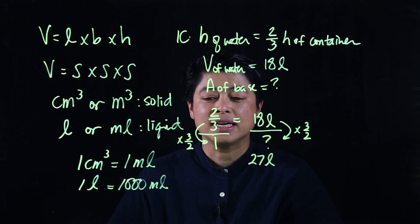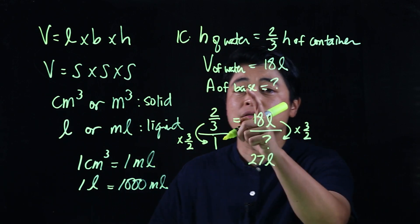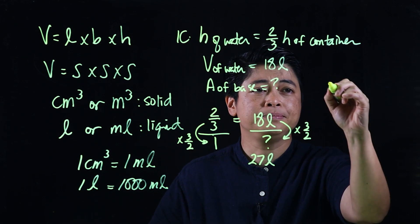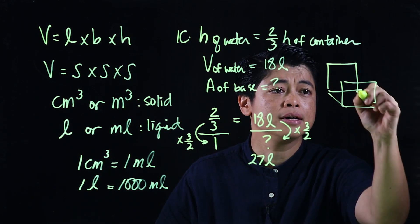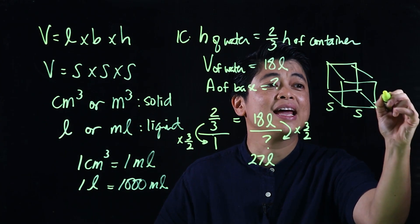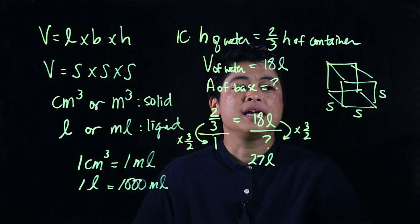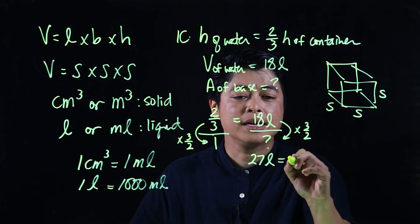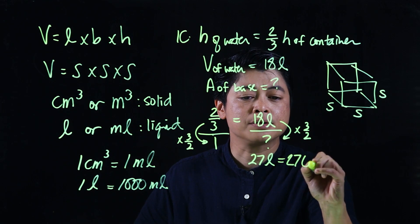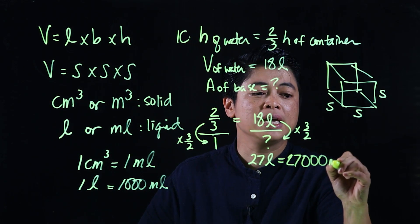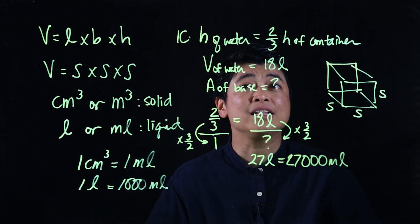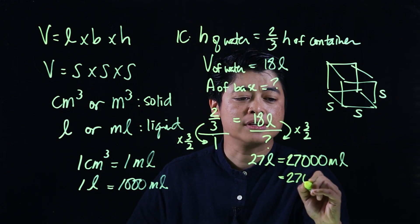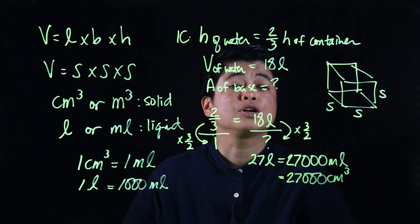The question asks for the area of the base, and it's a cubical tank — so the side, the side, and the height are all the same. We first convert 27 liters to milliliters: that's 27,000 milliliters, which then converts to 27,000 centimeters cubed.